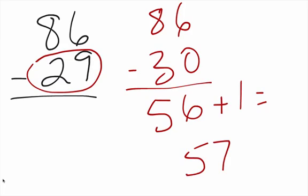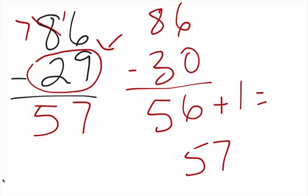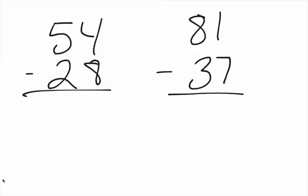If we did it the old-fashioned way, we'll get the same answer. We have to borrow, so we take 1 from the 8, make that a 16. 16 minus 9 is 7, and 7 minus 2 is 57 — we get to the same place. Again, what you want to do is round the bottom number up to the next multiple of 10, then ask yourself how far you had to go up, and add that to your answer.